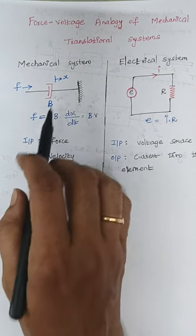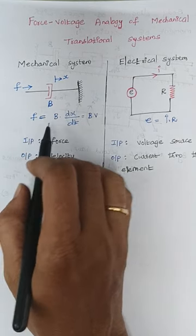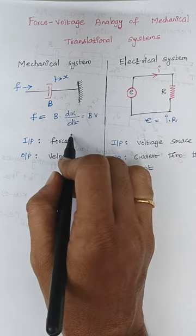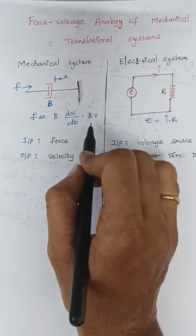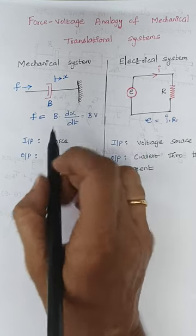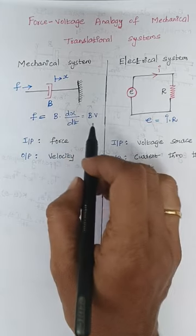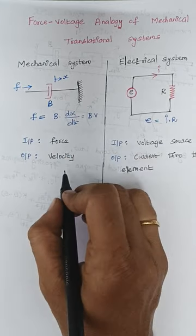The force balance equation is given as F equals B times dx/dt, and dx/dt is nothing but velocity. So here I'm writing it as B times V. The input we are giving is force and the output we are getting is velocity.